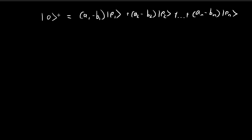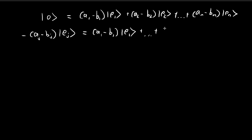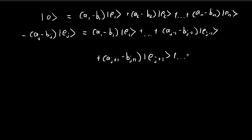We take the jth component and move it to the left-hand side. Reorganizing, the null vector doesn't do anything so we remove it. On the right-hand side we have a1 minus b1 times e1, going through to aj-1 minus bj-1 times ej-1. We skip the jth component and continue with aj+1 minus bj+1 times ej+1, all the way to an minus bn times en.